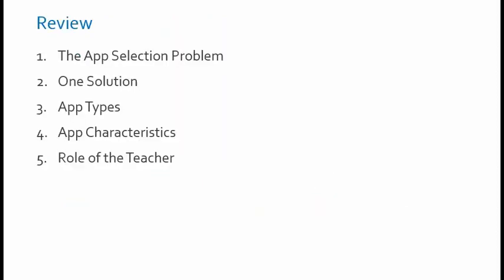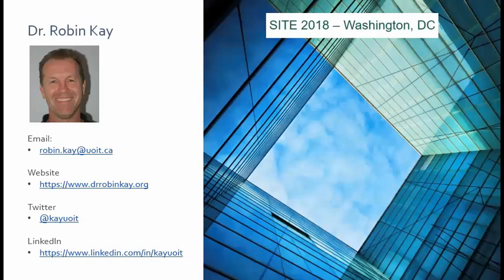To review: I looked at the app selection problem — thousands of mathematics apps are available and teachers need a systematic way to select and evaluate them. My solution was to conduct an extensive literature review focusing on math app types and characteristics, identifying five app types and eight characteristics. Types are used to select apps for specific purposes, characteristics are used to evaluate them. Finally, I looked at the role of the teacher, which is critical in making this framework meaningful and efficient. My name is Robin Kay — contact information is listed on this slide.